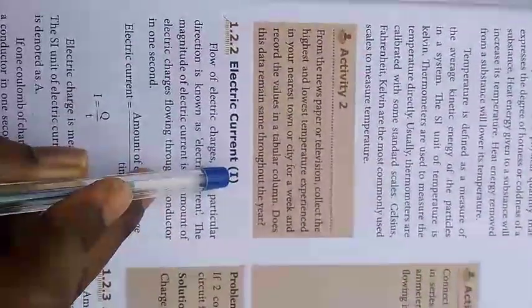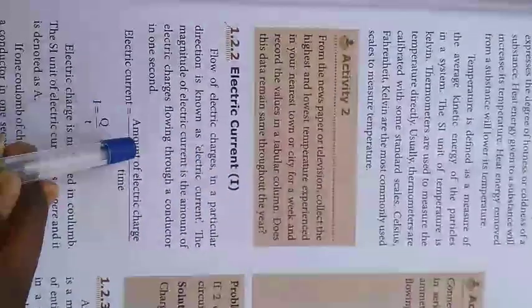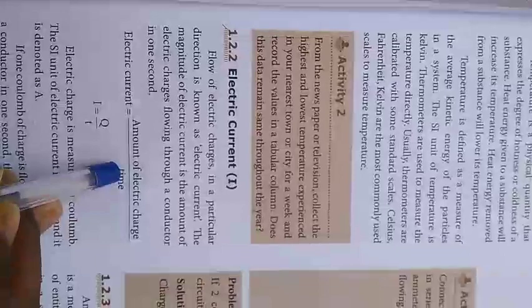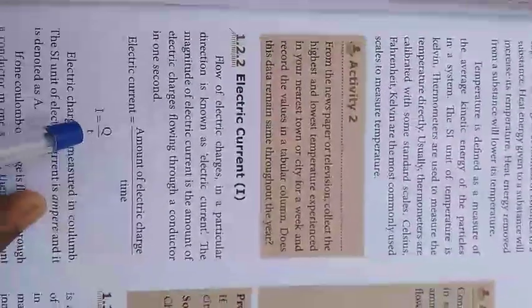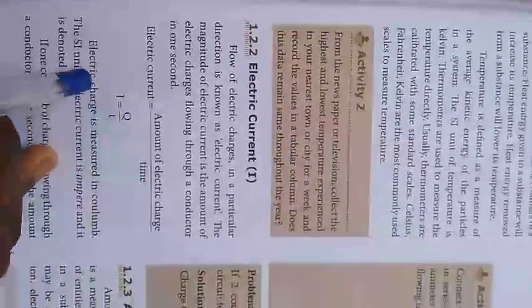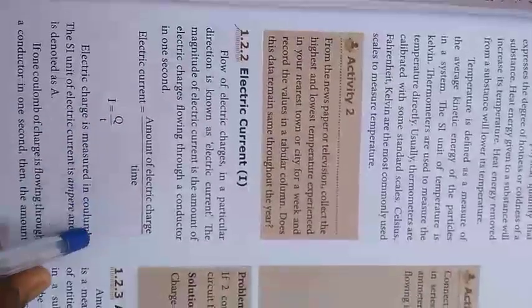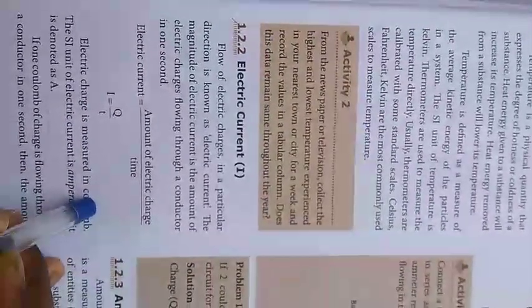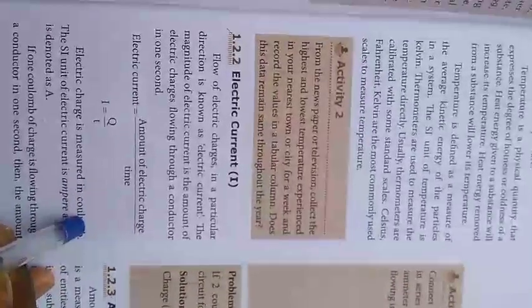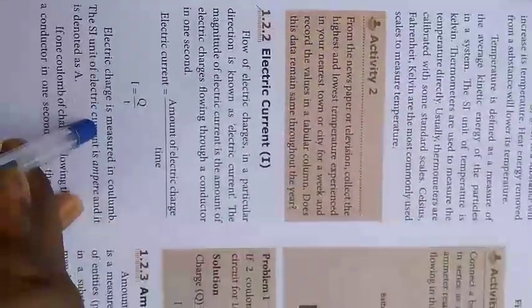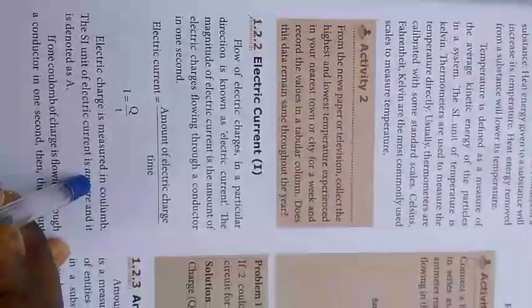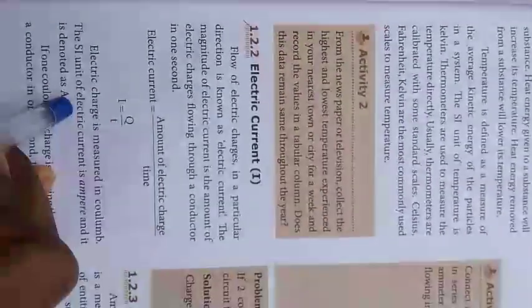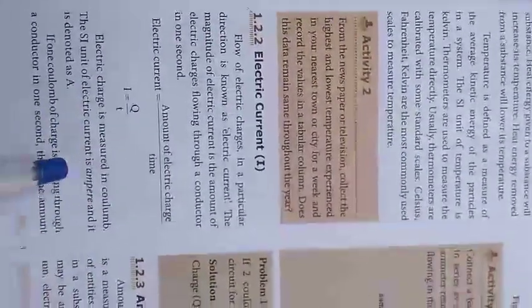Electric current equals the amount of electric charge (symbol capital Q) divided by time taken (symbol small t): I = Q/t. Electric charge is measured in coulombs. The SI unit of electric current is ampere, donated as capital A. When writing 'ampere', start with a small letter but use capital A as symbol.